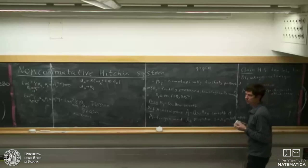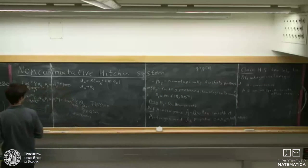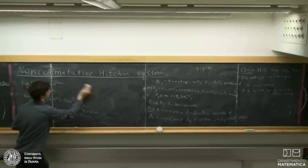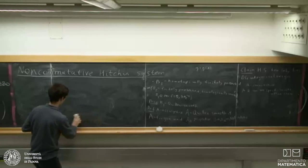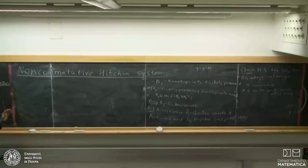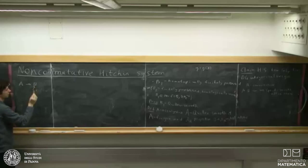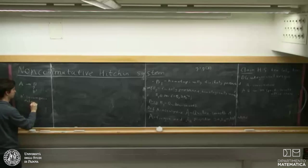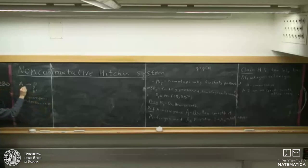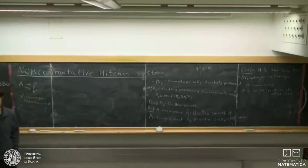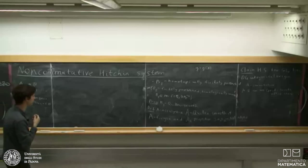Now let's relate this algebra to the moduli of stable and semi-stable vector bundles via representation spaces. An equivalent definition of equivalent smoothness is the following lifting property: given any algebra homomorphism and a square-zero extension B' of B, one can lift the homomorphism. This is analogous to Grothendieck's definition of smoothness in the commutative case.